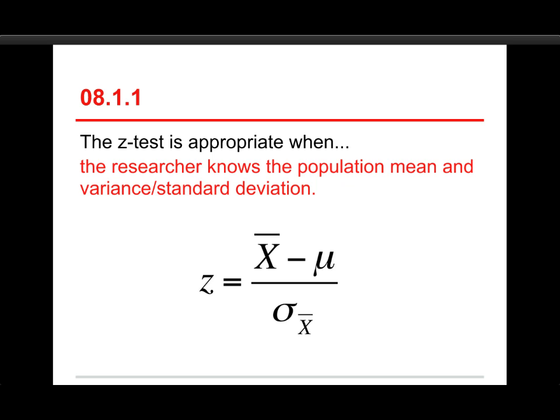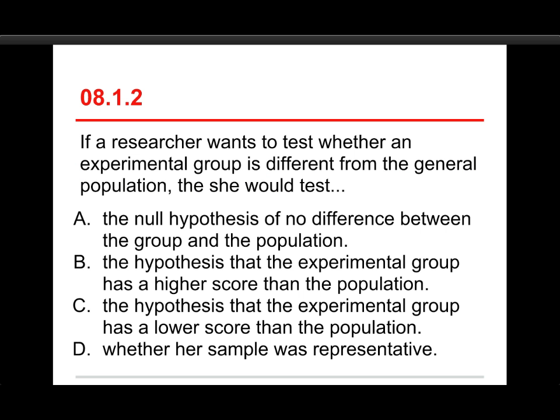Beneath that is the standard error. You see that sigma sub x-bar, and what that is, is it's based on the population standard deviation. So, in order to do the z-squared, you have to already know this information about the population.